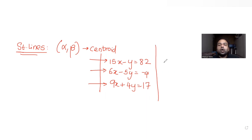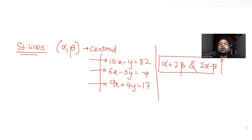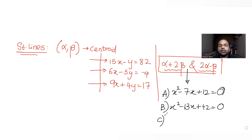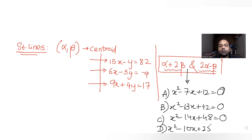We have been asked to find a quadratic equation whose roots are alpha plus 2 beta and 2 alpha minus beta, where alpha and beta are the coordinates of the centroid. The four options are: x squared minus 7x plus 12 equals 0, x squared minus 13x plus 42 equals 0, x squared minus 14x plus 48 equals 0, and x squared minus 10x plus 20.